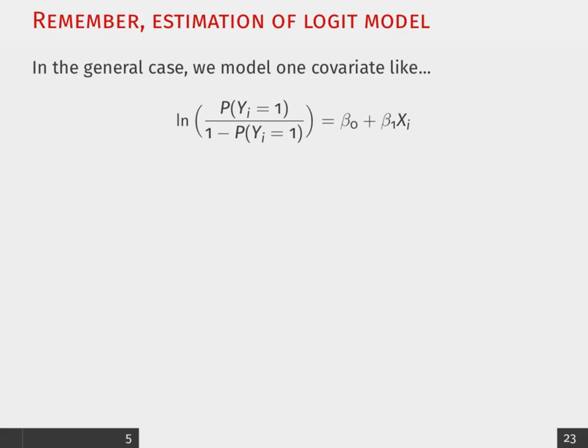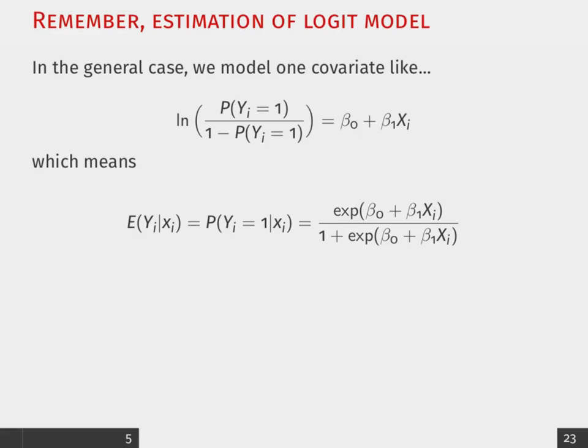Now, when we want to actually get the predicted probabilities of having CHD given some value of our covariate,